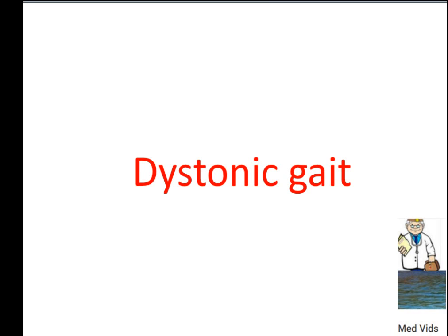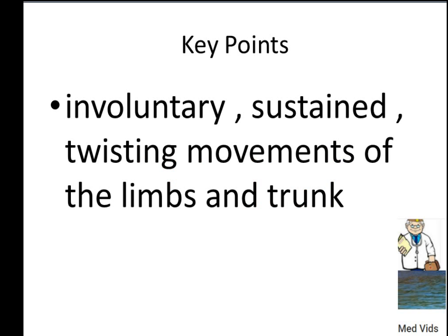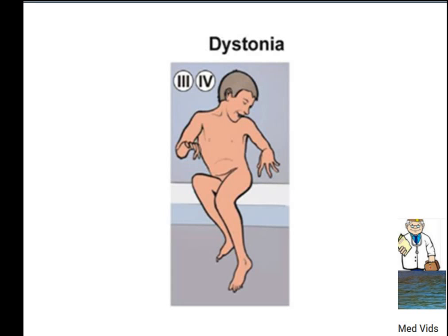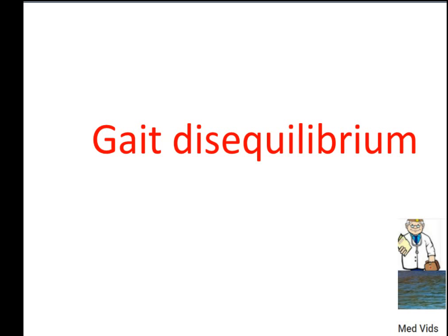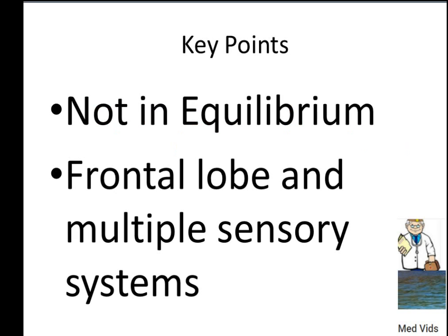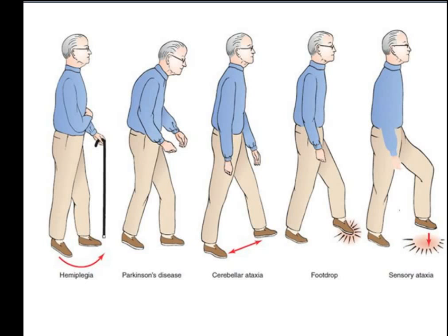Wide-based gait involves sensory ataxia, cerebellar disorders, and muscular dystrophies such as Duchenne and Becker. Dystonic gait — sustained twisting movements of the limbs and trunk, especially the neck (sternocleidomastoid). Gait disequilibrium — frontal lobe and multiple sensory systems; less commonly tested. Foot drop is caused by common peroneal nerve damage.